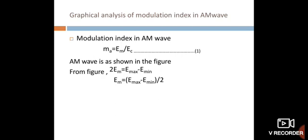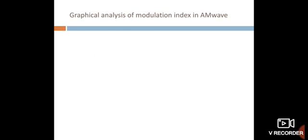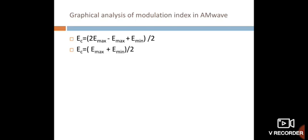From the figure: Em = (Emax − Emin) / 2 — equation 1. Ec = Emax − Em — equation 2. Substituting for Em in equation 2: Ec = Emax − (Emax − Emin) / 2. Therefore, Ec = (Emax + Emin) / 2.